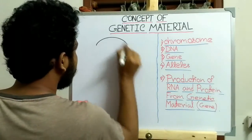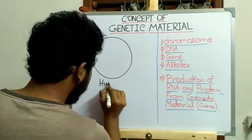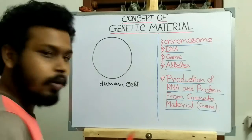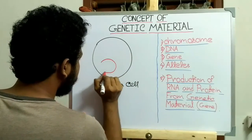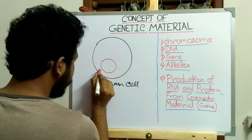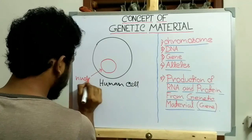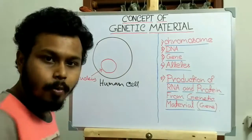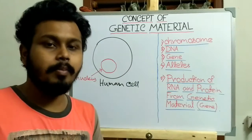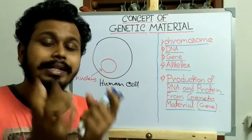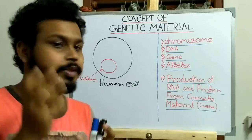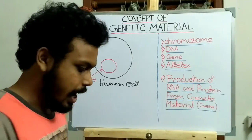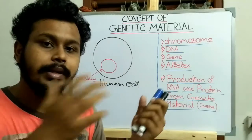Now suppose this is a human cell. A human cell is a eukaryotic cell and so it contains a membrane-bound nucleus. The genetic material is present in the nucleus as a chromosome. In a human cell there are 23 pairs of chromosomes, that means 46 chromosomes in total, and each chromosome pair is identical to each other, with one coming from each parent.